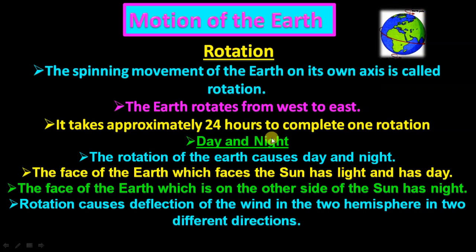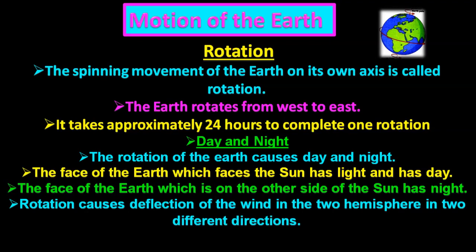Due to rotation of the earth, day and night occur. The face of the earth which faces the sun has light and it is day. The back side, which is not facing the sun, there will be night. The face of the earth on the other side of the sun has night.